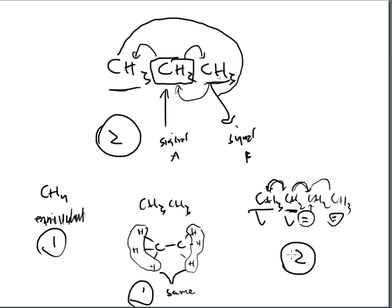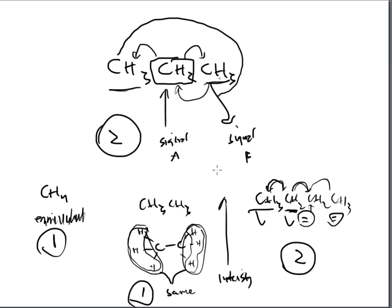We can go a little bit further and look at how many hydrogens are equivalent. This is one signal and this is one signal, but this carbon has four hydrogens that are all the same, and that molecule has six hydrogens that are all the same - there are more hydrogens, so the intensity of the line, the height of the line, will be much taller in that NMR spectrum. So we've talked about the number of signals and the intensity or height of these peaks in the spectrum. In the next video, we'll talk about shielding a little bit more.